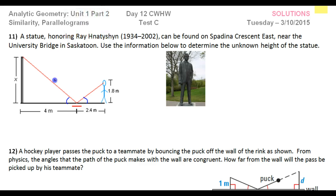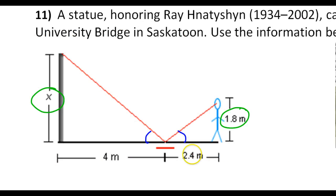So similar triangle-wise, these two sides are corresponding and these sides are corresponding. We should be able to set up our proportion very easily. For example, X over 1.8 should equal 4 over 2.4.